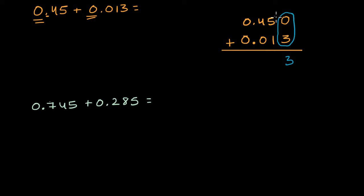Then I could go over to the hundredths place. Five hundredths plus one hundredth is six hundredths. Then I can go to the tenths place. Four tenths plus zero tenths or no tenths is going to be four tenths, of course. And then I don't have any ones. The decimal will just show up right there to the left of the tenths place. And then I have zero ones plus zero ones. Well, that's just still going to be zero. So there you have it. This is going to be 0.463.